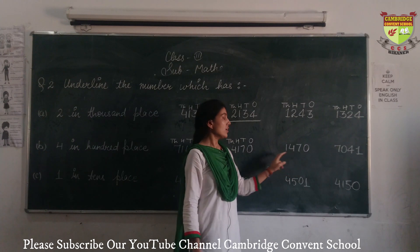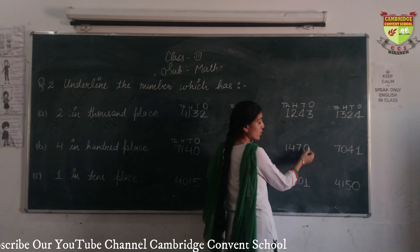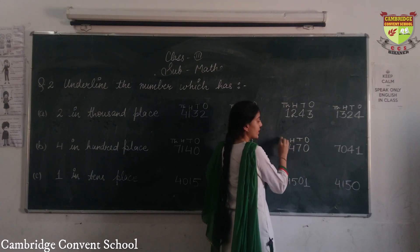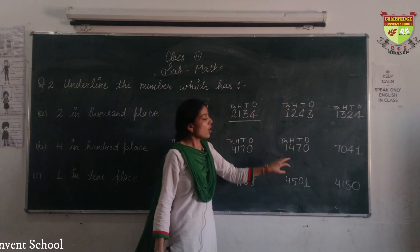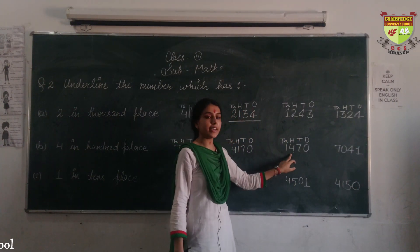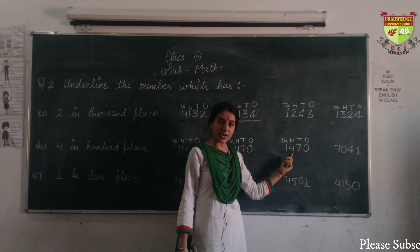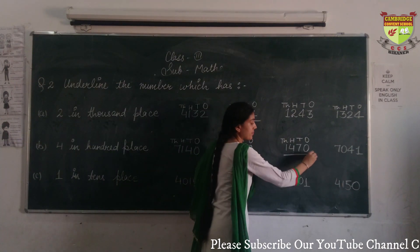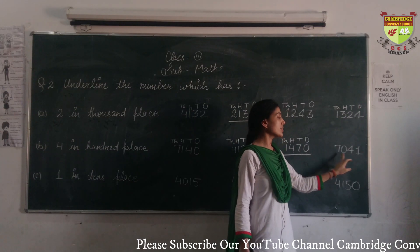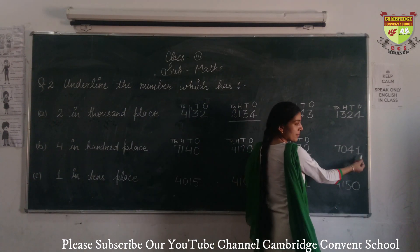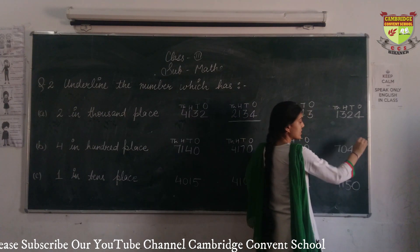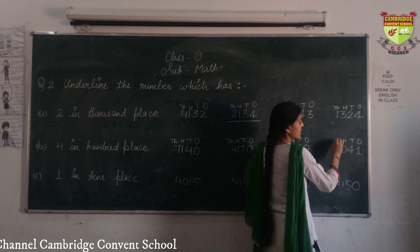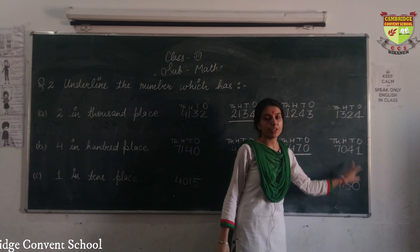Checking next: for 1,470 — starting from the right, 0 is in 1's, 7 is in 10's, 4 is in 100's, and 1 is in 1000's. So 4 is in 100's place — underline this number. Next, 7,041: starting from the right, 1 is in 1's, 4 is in 10's, 0 is in 100's, 7 is in 1000's. So 4 is in 10's place.